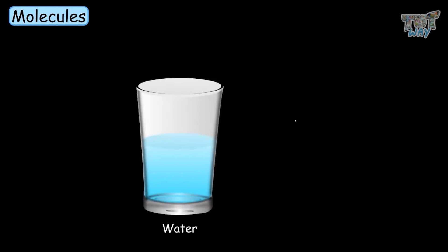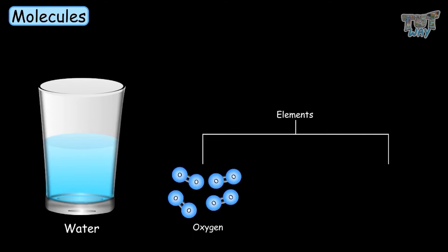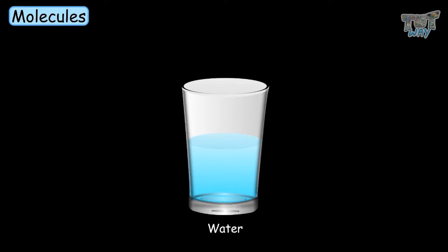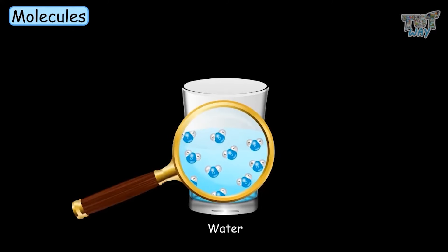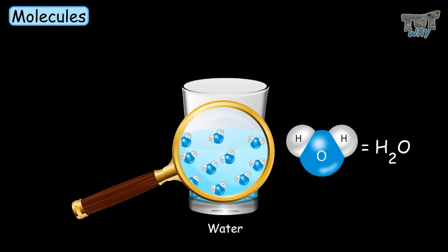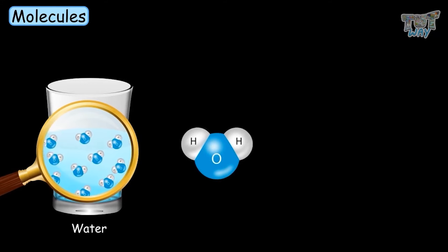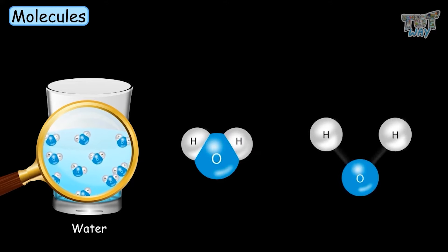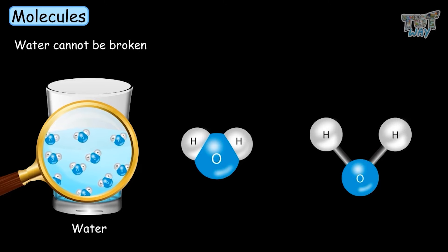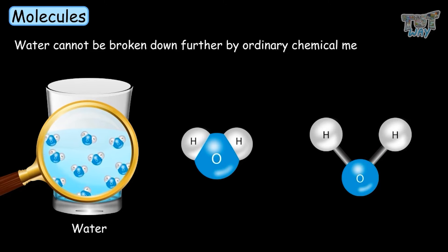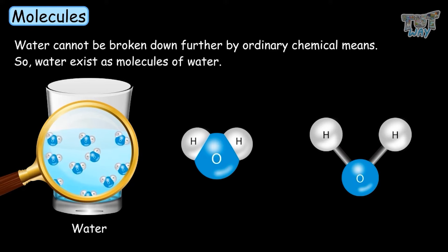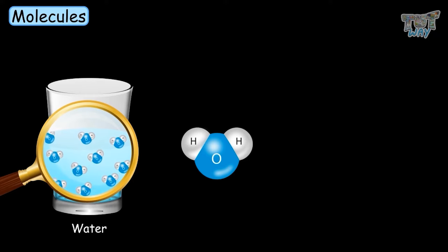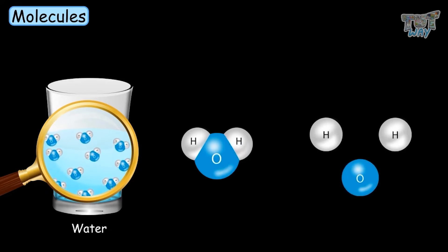Here we have another example of molecules — water. Water is made up of two elements: oxygen and hydrogen. Water exists as molecules of water, and each molecule is denoted as H2O, which means each water molecule has two atoms of hydrogen and one atom of oxygen. You cannot further break down this molecule into atoms by ordinary chemical means. So water exists as molecules, and each molecule has two types of atoms: hydrogen and oxygen — two atoms of hydrogen and one atom of oxygen.